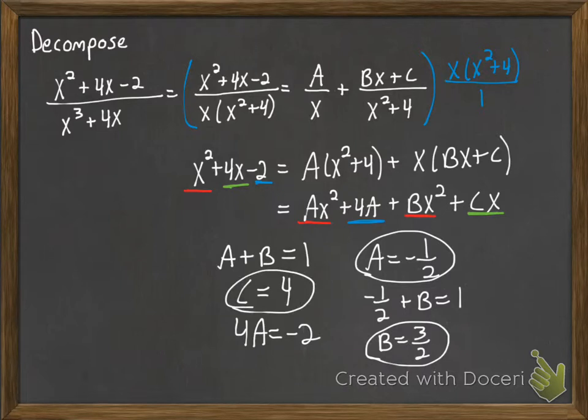So now that we know what a, b, and c are, we can now take those back up into our fraction and plug the a into a over x and bx plus c over x squared plus 4. So we get negative 1 half over x plus 3 halves x plus 4 over x squared plus 4.